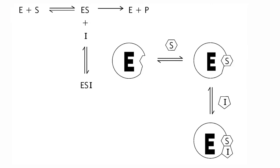The inhibitor does not have any affinity for the free enzyme. For uncompetitive inhibitors, its binding site is created only on interaction of the enzyme and substrate.